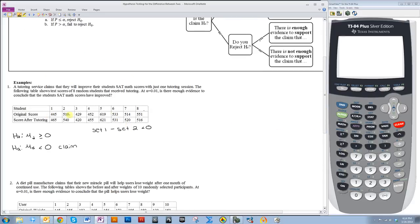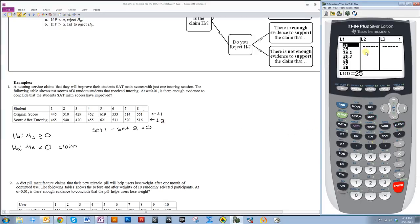Now what I want to do is enter these values into L1 and these values into L2 in my calculator. I do that by hitting stat, then edit. If you have stuff in here like I do, you want to highlight the column, the header L1, press clear, and enter. So I'm going to put these numbers in the first column.